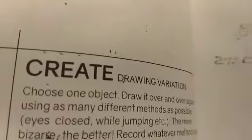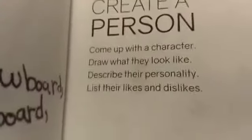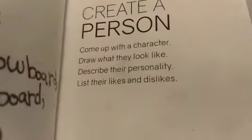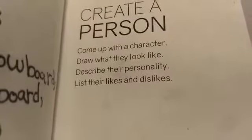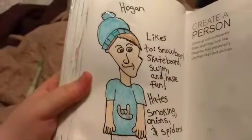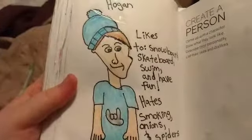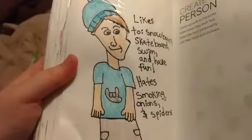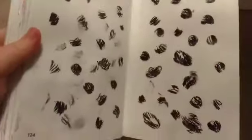This page was supposed to be drawing variations, but I'm going to go back to that. And then here I had to create a person and come up with a character — draw what they look like, describe their personality, list their likes and dislikes. So I came up with this character named Hogan. His likes are snowboarding, skateboarding, swimming, and just having fun. His hates are smoking, onions, and spiders.